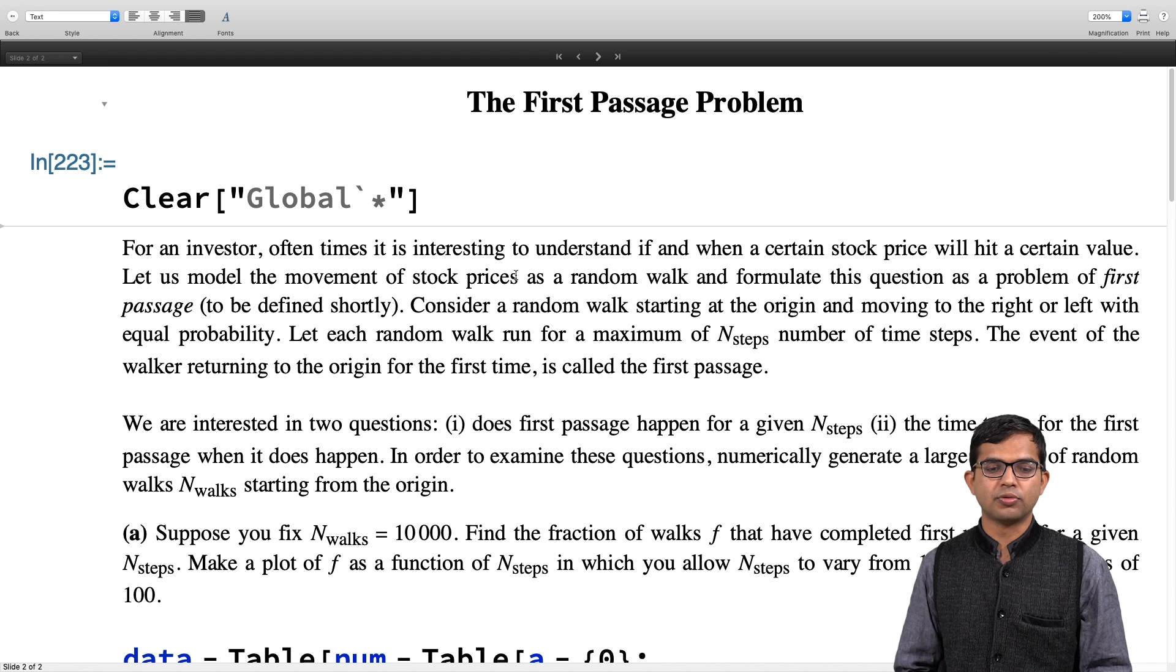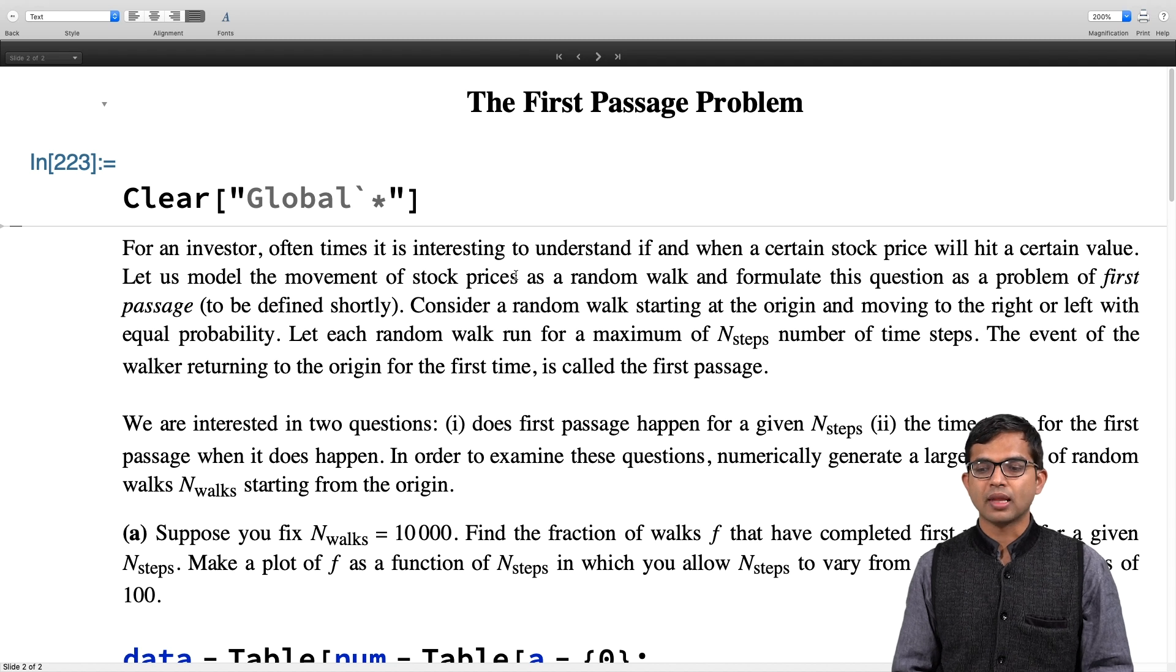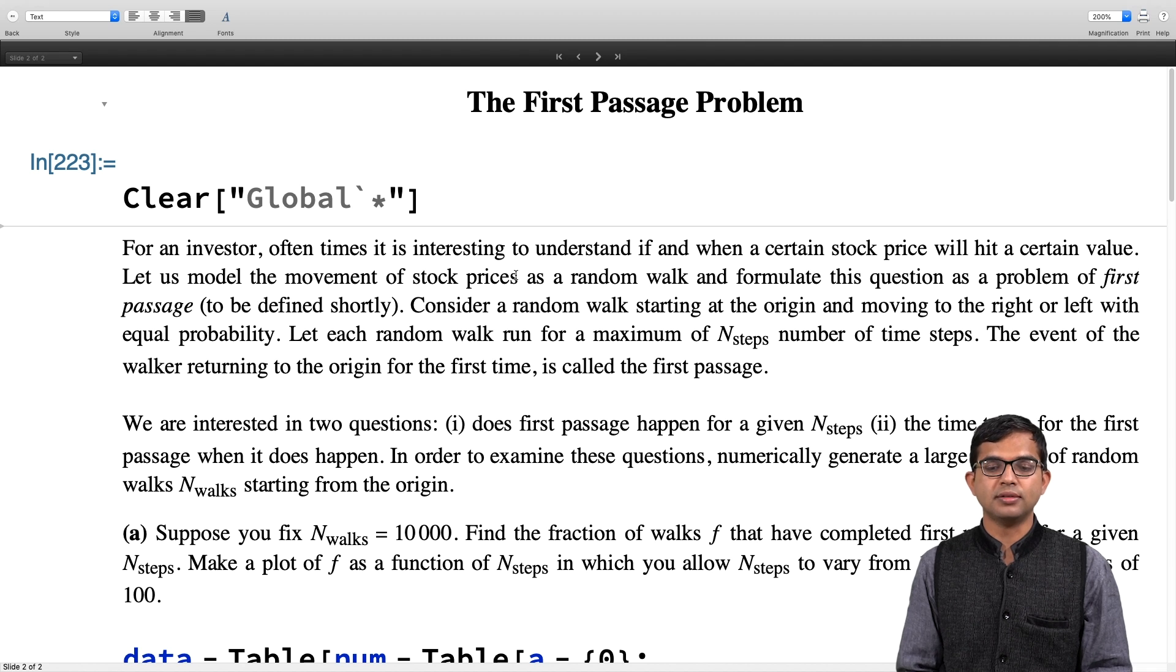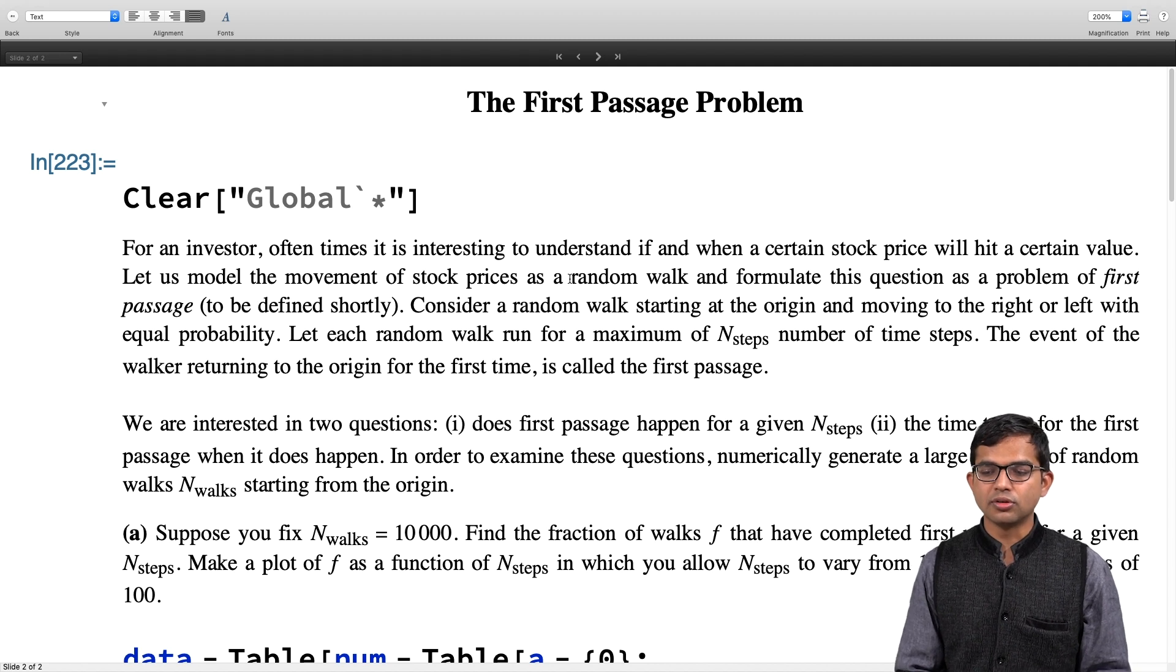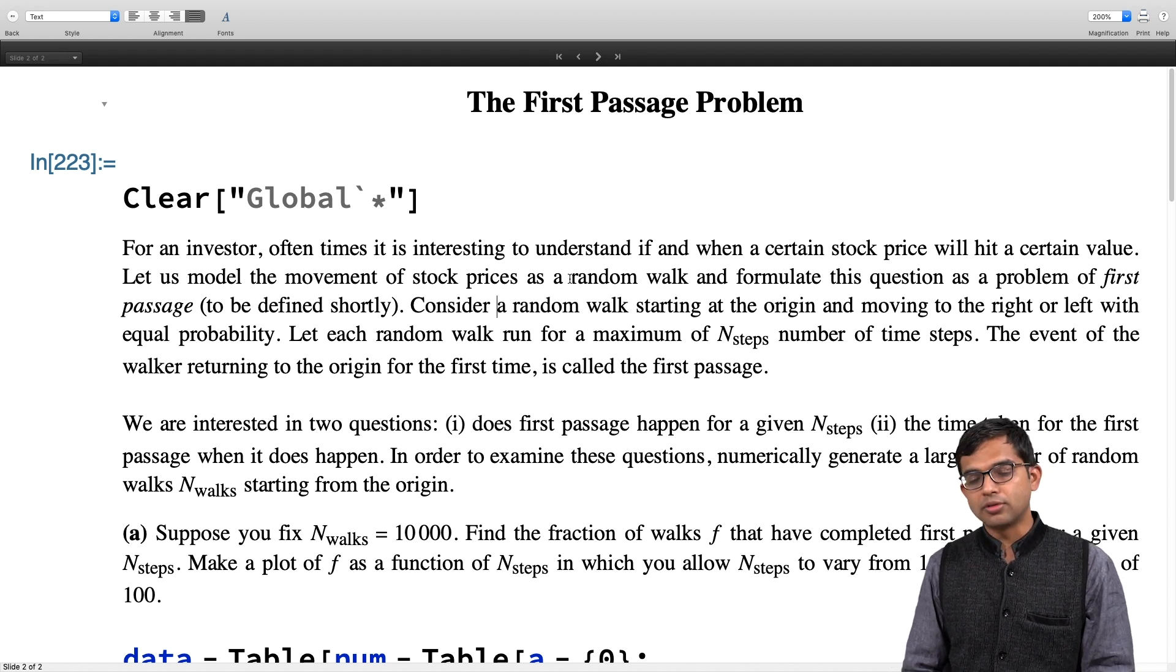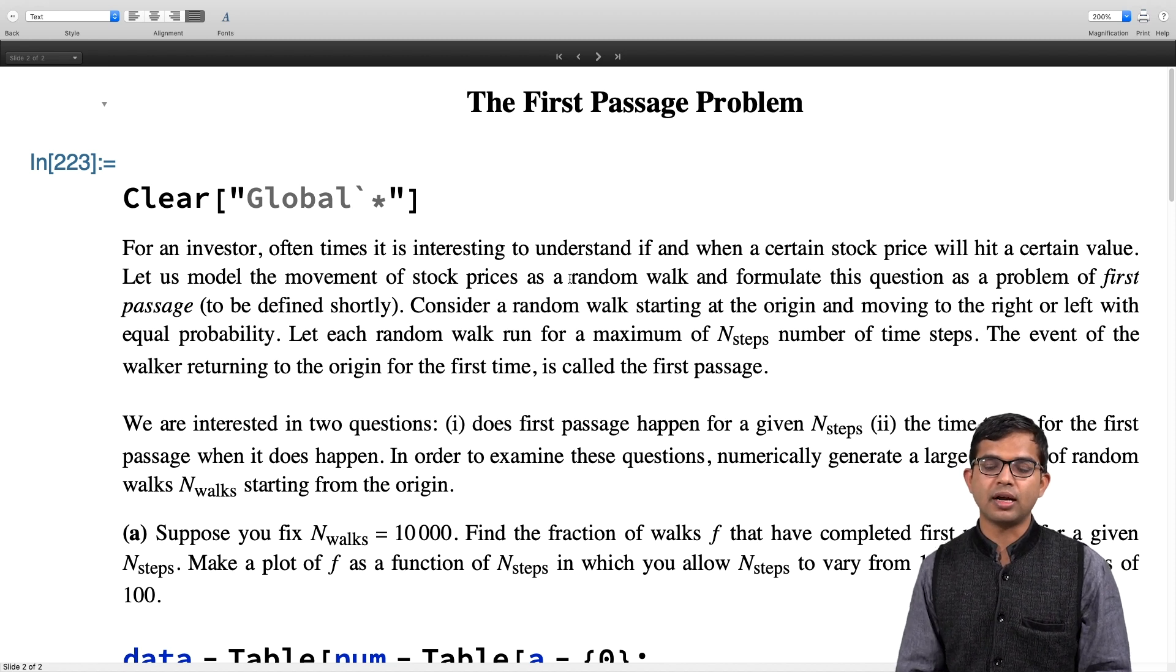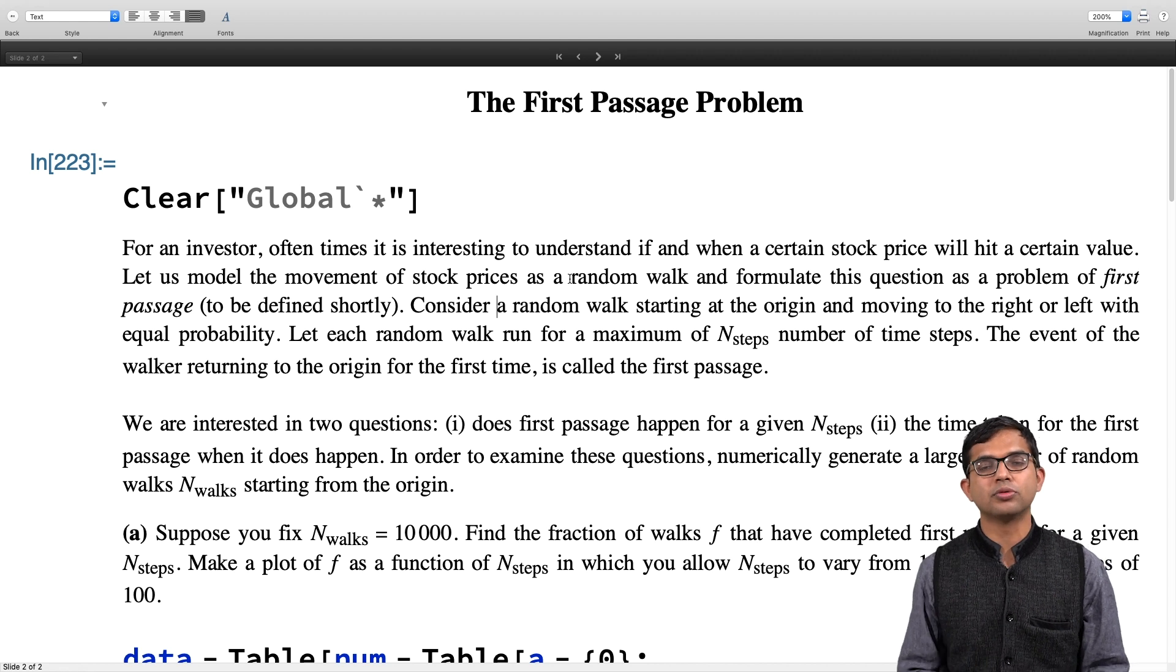This problem pertains to, for example, that of a stock investor. Think of a stock investor who has put some money in some piece of stock at some point, and then they find that after some time the value of the stock has dropped. They are hoping and praying that the stock would come back to where it started. This question of whether, if you model the stock prices as a random walk, if the random walk will again pass through the origin or any particular point that you wish to choose, is a problem of first passage.